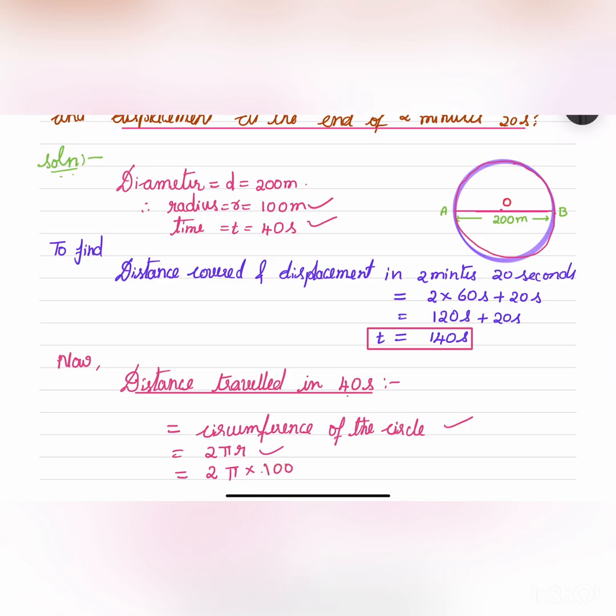So let us substitute that and that will be equal to 200π meters. So the athlete covers 200π meters in 40 seconds.